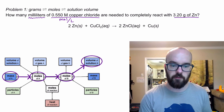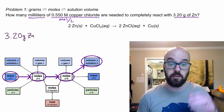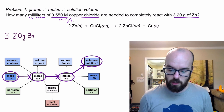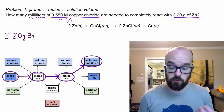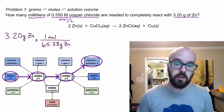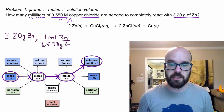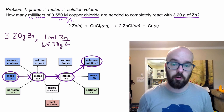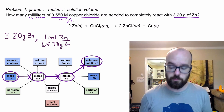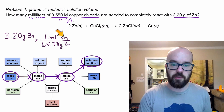I'm going to start by writing 3.20 grams of zinc — that's my starting point. I've got to convert to moles of zinc, so I'm going to use the molar mass of zinc, 65.38 grams per mole, which I get from the periodic table. That converts to moles of zinc.